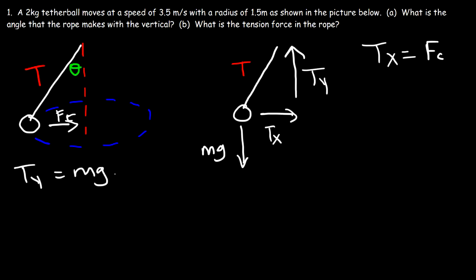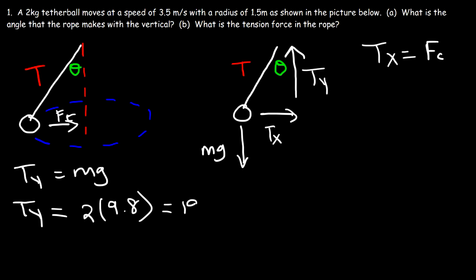In order to calculate the angle we need to find Tx and Ty. Starting with Ty: Ty is equal to the mass of 2 kilograms times the gravitational acceleration of 9.8 meters per second squared. So 2 times 9.8 gives us 19.6 newtons. That's Ty.